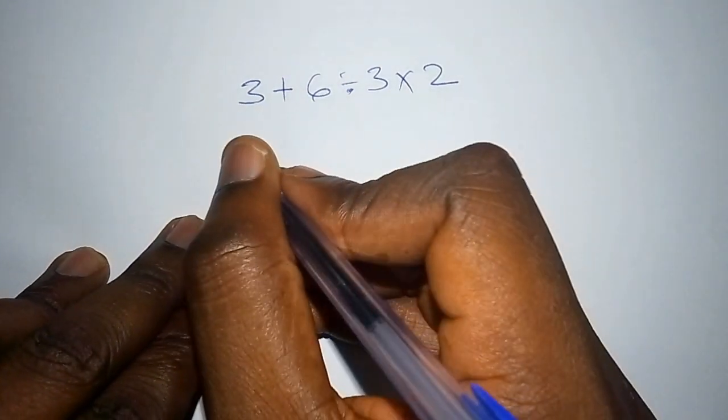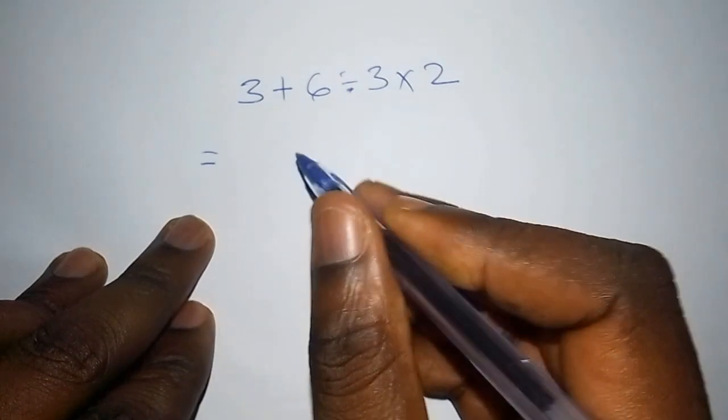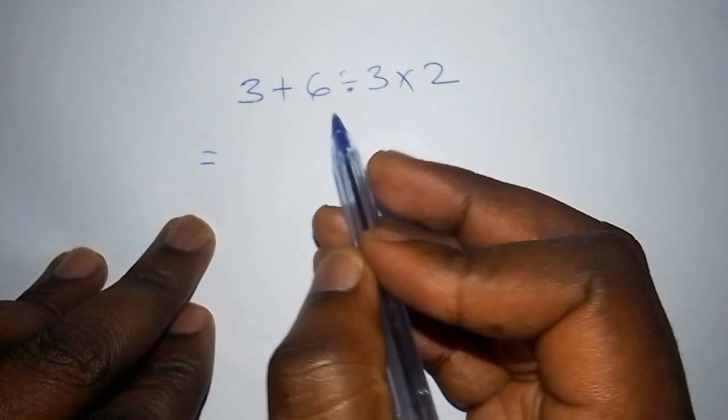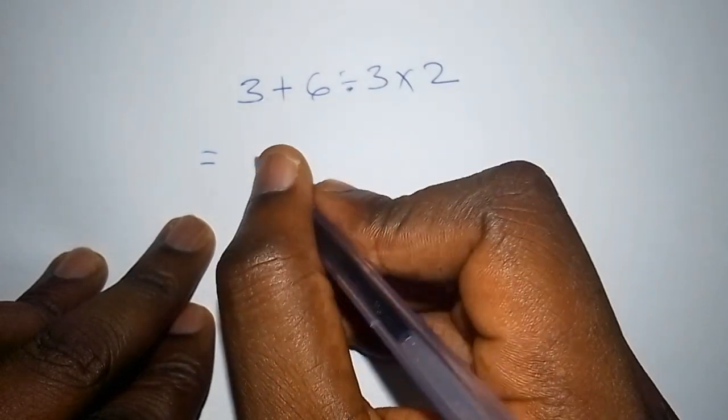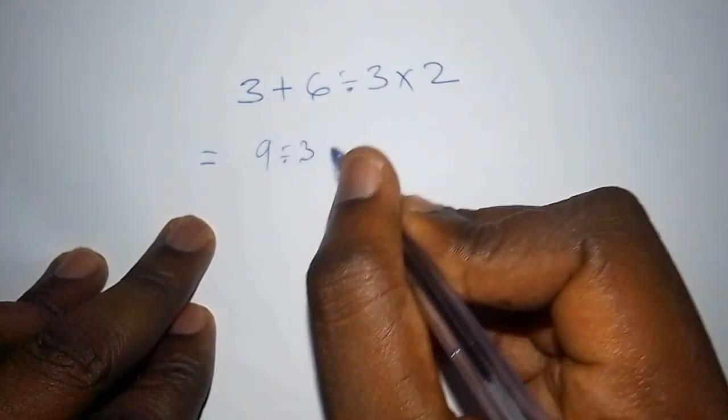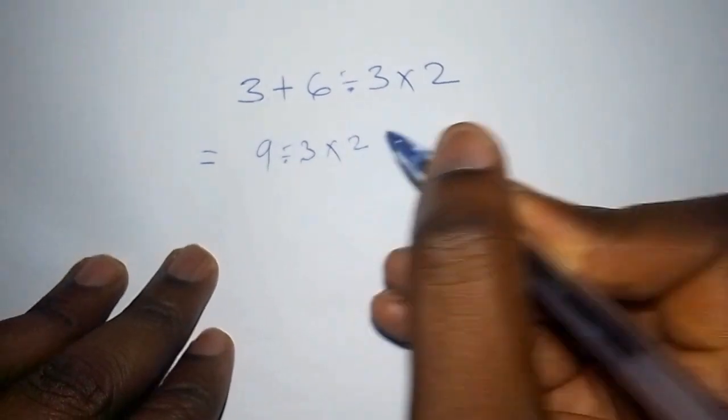So most people do it this wrong way: they say 3 plus 6, and 3 plus 6 is 9, then from there they divide by 3, then multiply by 2.